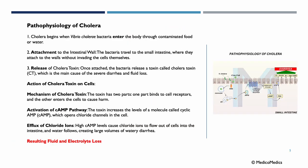In the pathophysiology of cholera, the Vibrio cholera bacteria enters the body through contaminated food or water, then travels to the small intestine and attaches to the walls without invading the cells themselves. Rather, the bacteria release the cholera toxin, which is the main cause of the severe diarrhea and fluid loss that follows.